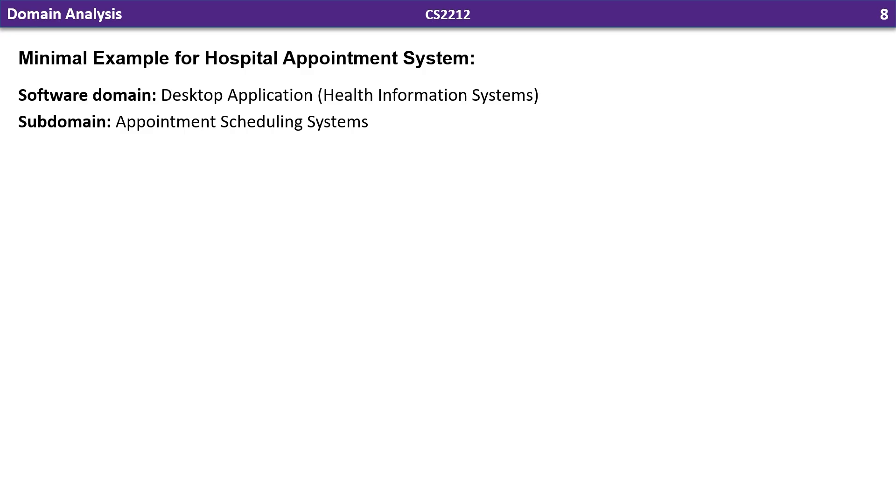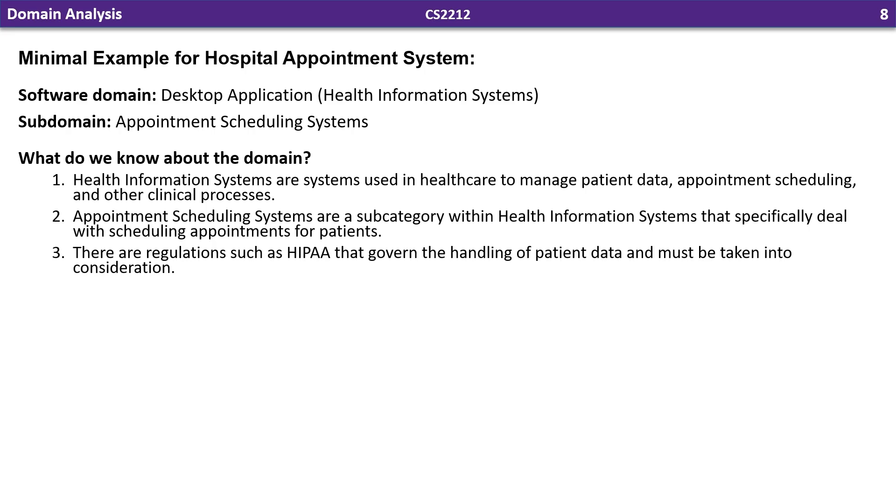For this case, let's keep talking about that appointment scheduling system for a hospital. So what do we know about the domain? The domain is a health information system, and more specifically, an appointment scheduling system. Note that we don't simply just say the domain names here. We also describe it and mention some relative regulations we know about for this domain.